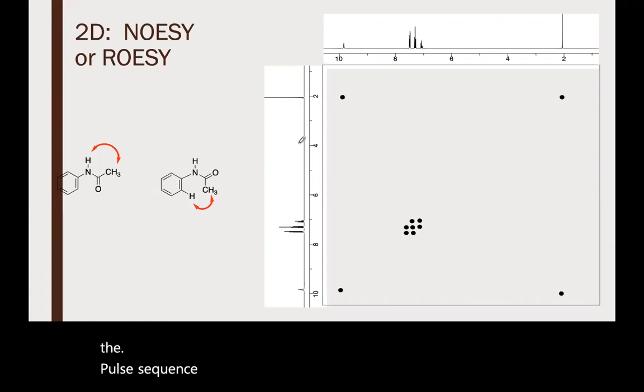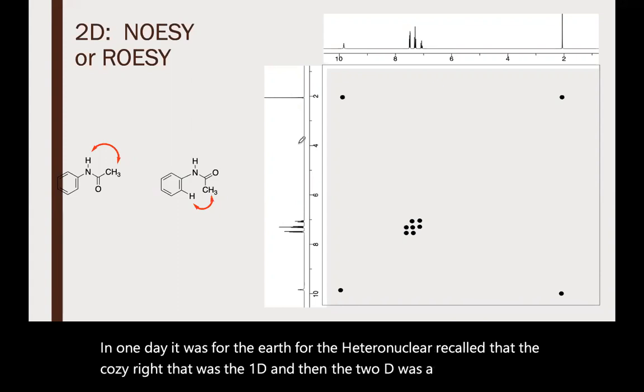For the heteronuclear coupling, we called the 2D experiment COSY. The 2D NOESY is looking for things that are close in space.